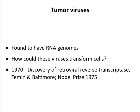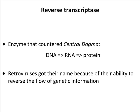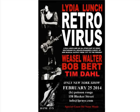Howard Temin and David Baltimore independently discovered reverse transcriptase in these RNA tumor viruses, which led them to be called retroviruses. They got the Nobel Prize in 1975. This enzyme went counter to the central dogma — always thought to be DNA to RNA to protein. Reverse transcriptase took RNA and made DNA from it, totally unusual and never seen before. That's why they got the name 'reverse transcriptase' — they reversed the flow of genetic information.